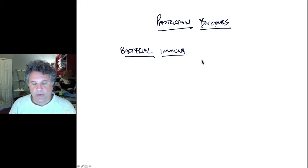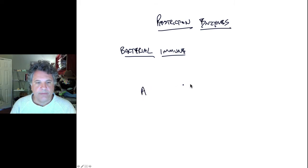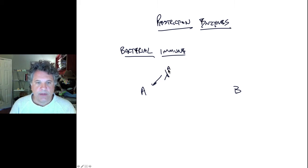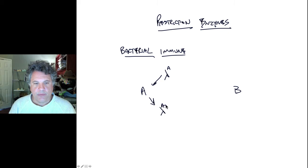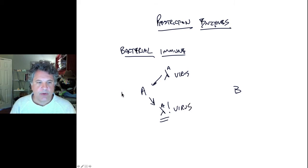We don't normally think of single-celled organisms as having an immune system, but Arber found that bacteria he was growing — strain A and strain B — behaved differently. Lambda bacteriophage grown on strain A bacteria would produce lots of progeny viruses perfectly capable of growing on strain A bacteria.